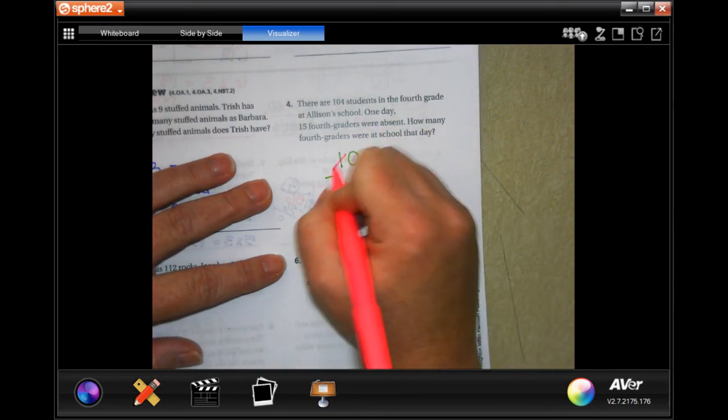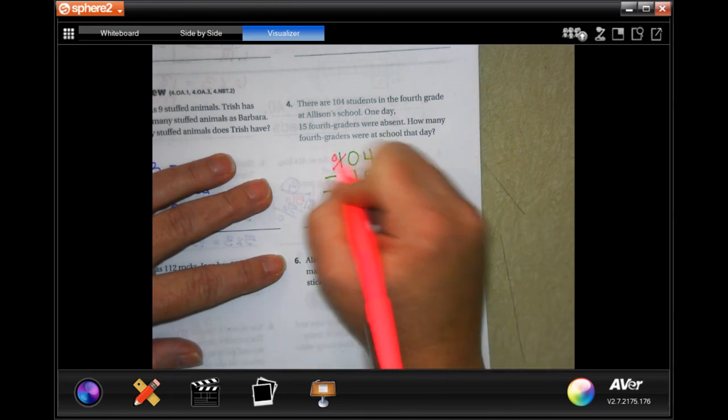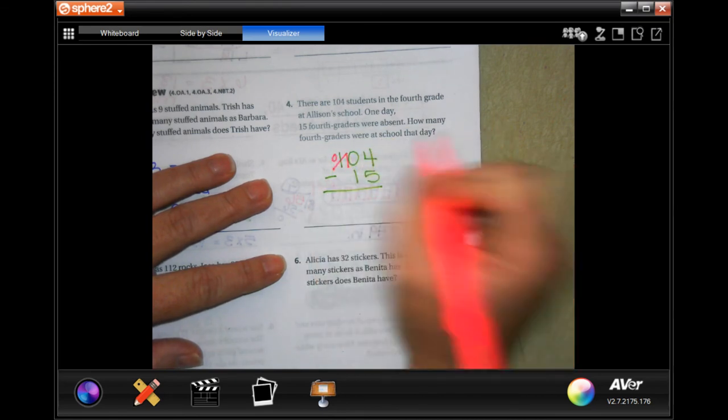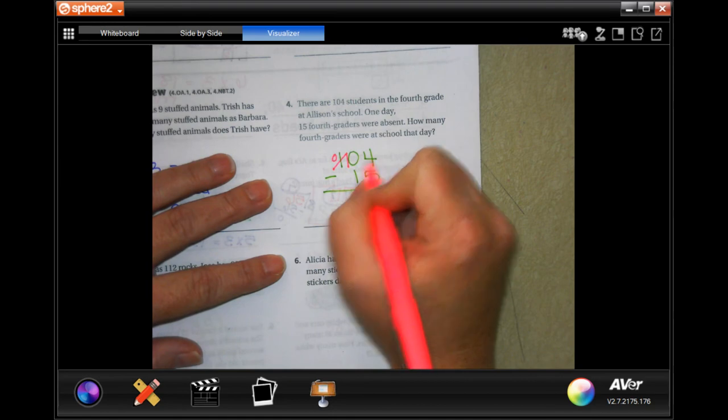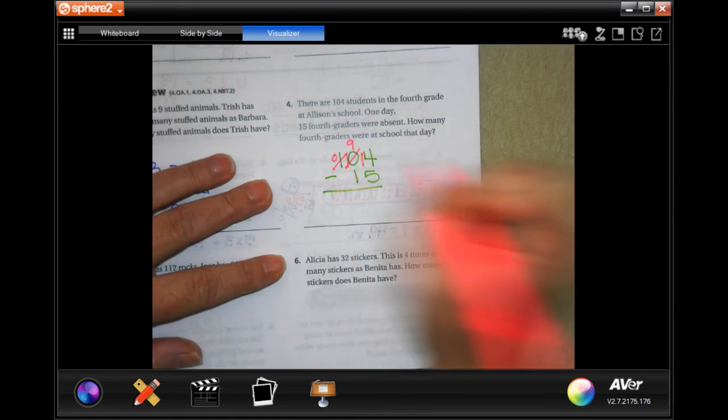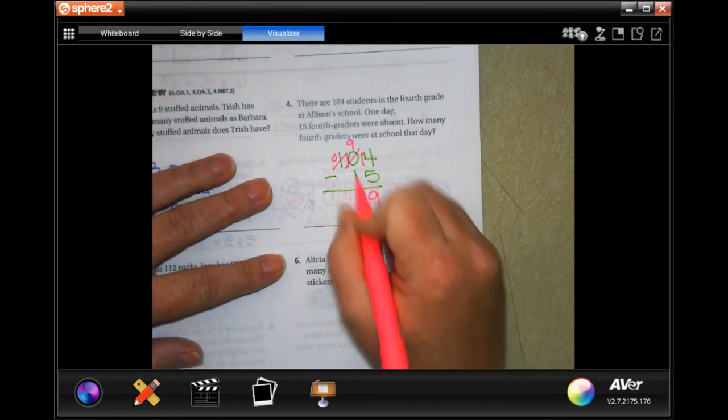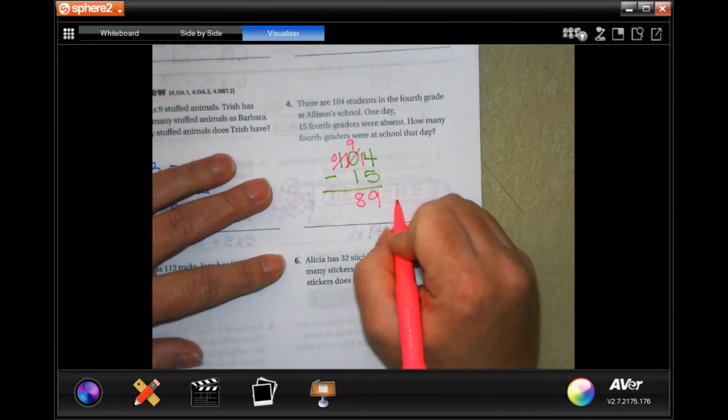Four cannot take away five. I can't borrow from zero. I go all the way over, make that a zero, now that's a 10. Now in order to borrow one I can borrow one from the 10 which makes it a nine and it makes this 14. So 14 take away five is nine and nine minus one is eight. There are 89 fourth graders.